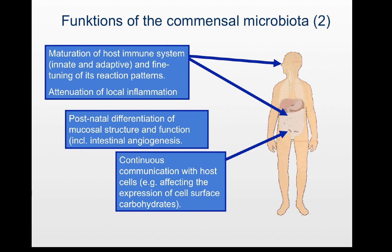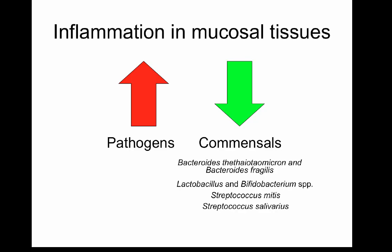It can also be demonstrated that the commensal microbiota is important for the postnatal differentiation of our mucosal structure and function — for example, intestinal angiogenesis. And it is interesting that there is a continuous communication between the microorganisms and our host cells — for example, affecting the expression of cell surface carbohydrates on our surfaces. In our gut, we have bacteria that like to metabolize fucose. If they are present, our cells will present fucose on their surface, whereas if they are absent, fucose will not be present on the cell surface. So a functional adaptation between the microbiota and our own cells.